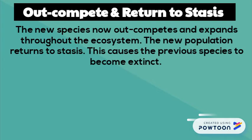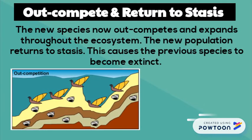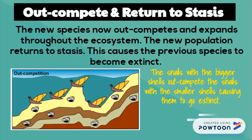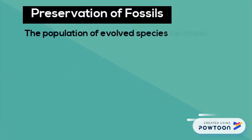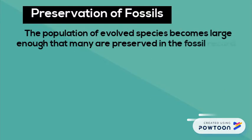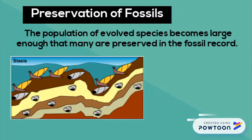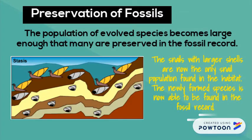The snails with the larger shells will need more resources to live and reproduce, out-competing the smaller snails, causing them to go extinct. Now the larger shelled snails have reached stasis — they are living, growing, and reproducing at a steady rate. In the fossil record, you will now see a new species of snails visible.